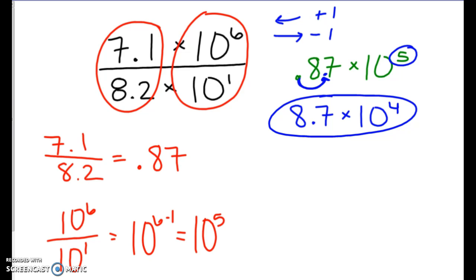So we end up with a 4 as our exponent there. So 8.7 times 10 to the 4th is our final answer. It was a little bit of a rounded answer, an estimation because we had to round with our decimal.